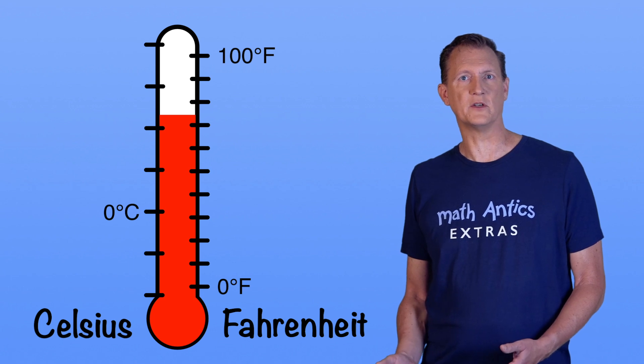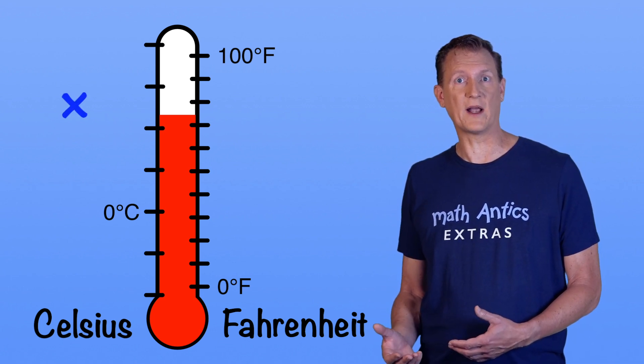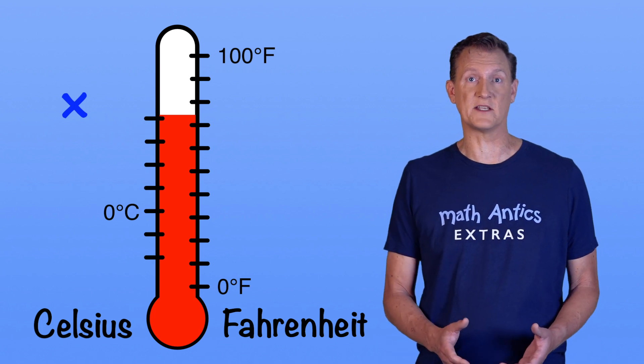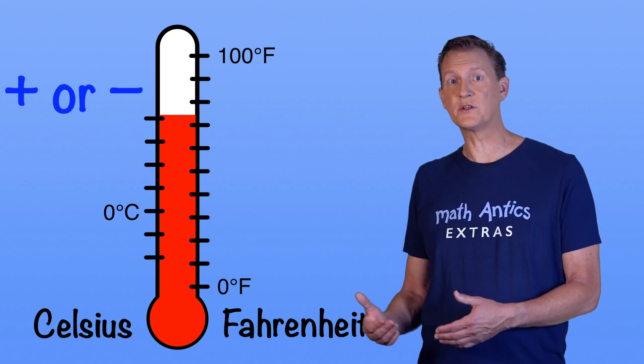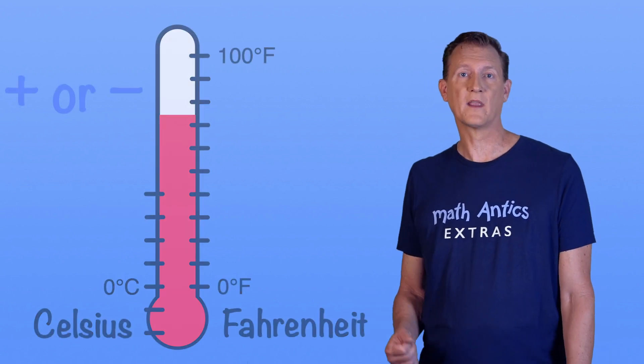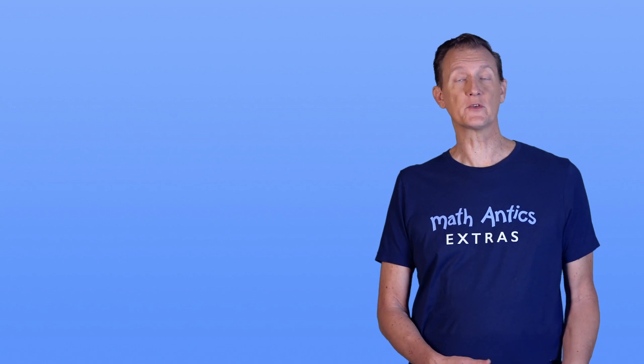To convert temperatures, you have to do two things. Since the size of the degrees is different, you have to multiply by a certain amount to get the degrees to be the same size. And since the zero points are at different temperatures, you have to add or subtract a certain amount to get the zero points to line up. The specific procedure we follow depends on if we're converting from Celsius or Fahrenheit.